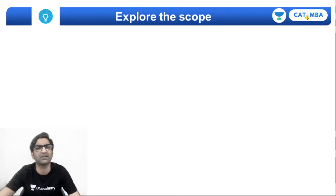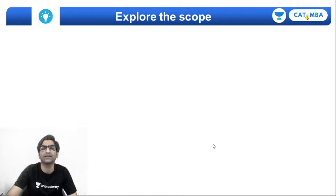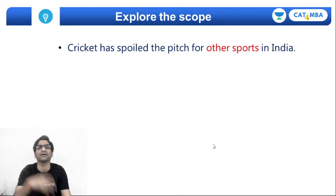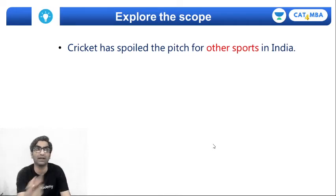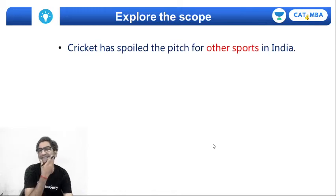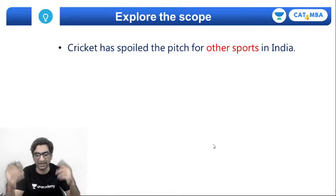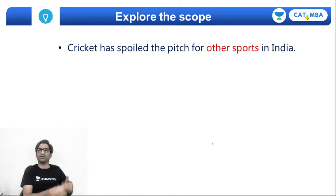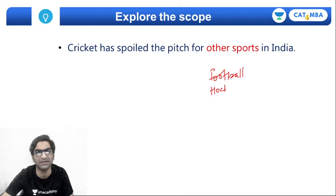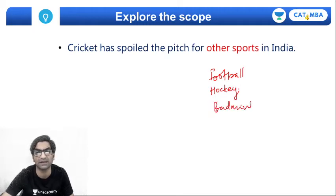Let's discuss how to explore the scope. I'm going to highlight words within the topic that you should break down and define. The first thing I want to focus on is what does 'other sports' mean. When it says other sports, should I straight away talk about the next few popular sports? Are we talking about games like football, hockey — which is very famous in India — maybe badminton, which is very famous nowadays, but also tennis?